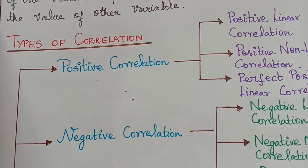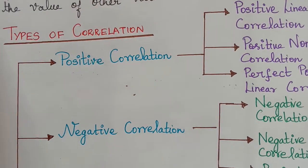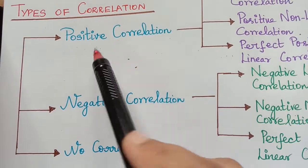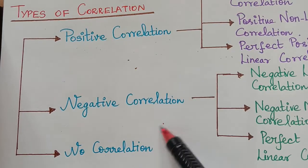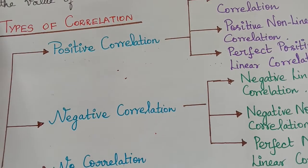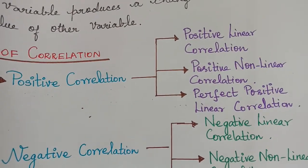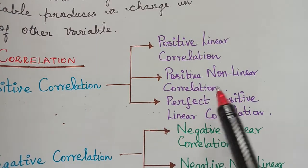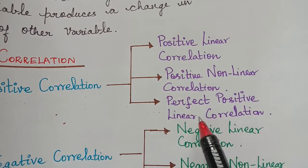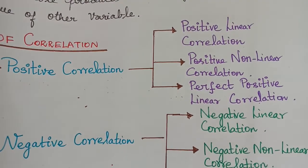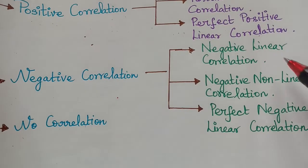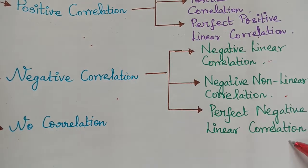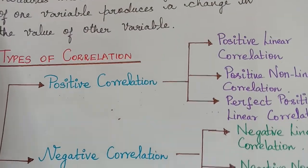We shall now learn about the types of correlation. Depending upon the change in the value of the variables, correlation can be categorized as positive correlation, negative correlation, and no correlation. These can be further classified as: under positive correlation we have positive linear correlation, positive non-linear correlation, and perfect positive linear correlation; and under negative correlation we have negative linear correlation, negative non-linear correlation, and perfect negative linear correlation.